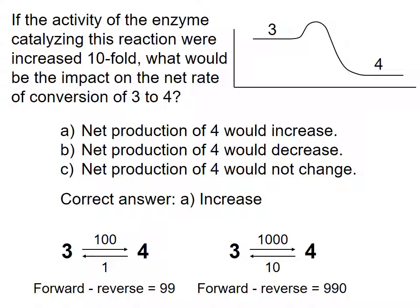An analogous result would occur if enzyme activity were decreased. A reaction at equilibrium would be unaffected, while a reaction with a large negative delta G would be considerably slowed.